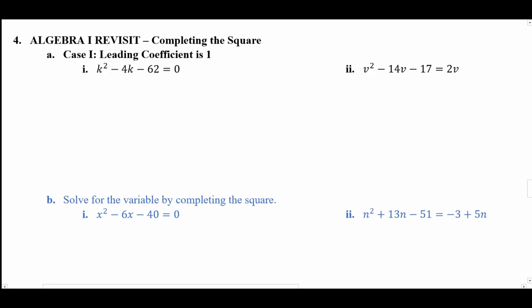We have two cases for completing the square. Case 1: the leading coefficient of the polynomial is positive 1. In Problem 1, the coefficient of k² is positive 1. The first step is to move the constant to the other side. Adding 62 to both sides, we get: k² − 4k = 62. We leave a space for the value we will add.